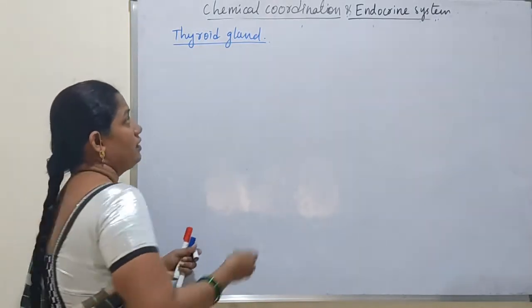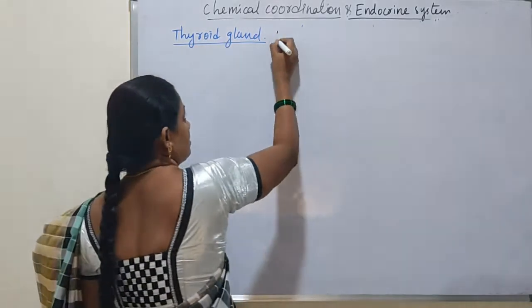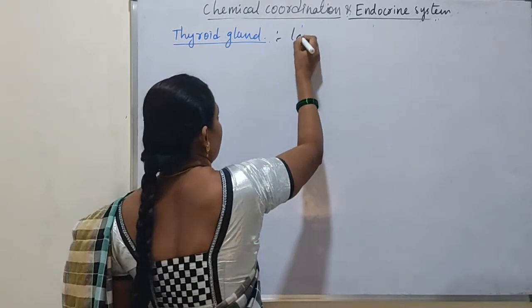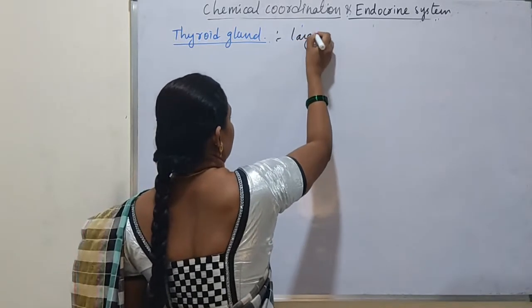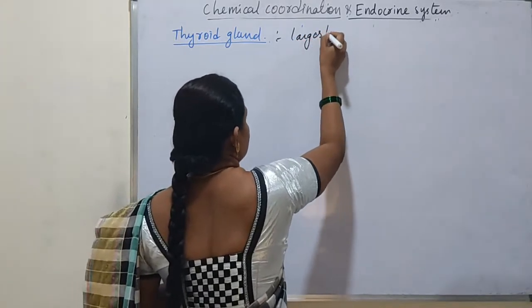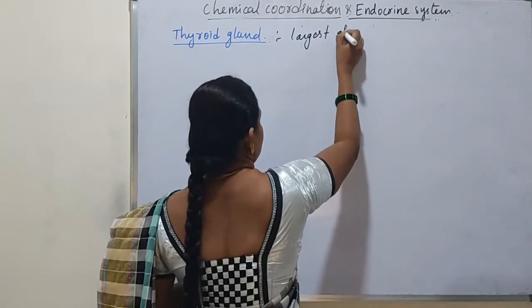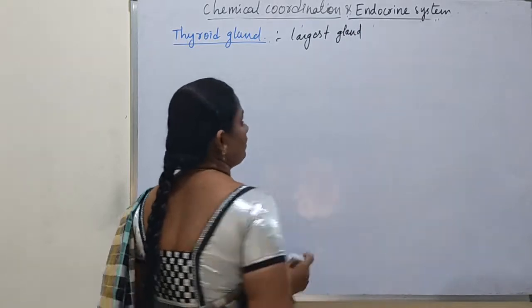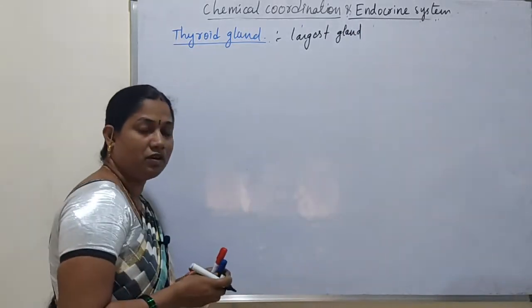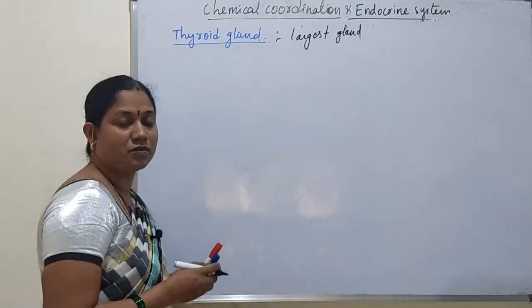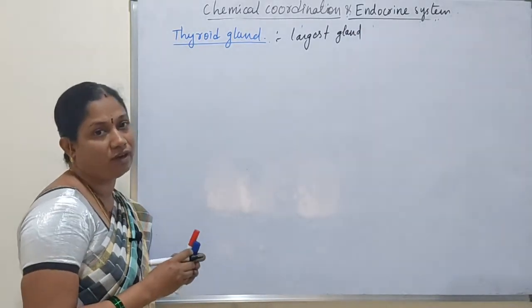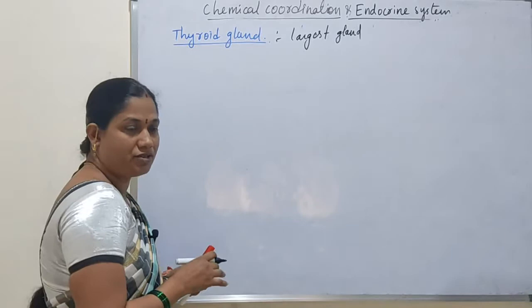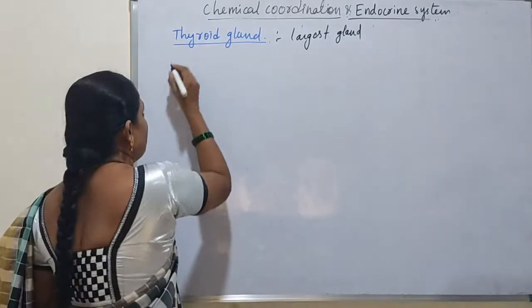The thyroid gland is the largest gland in the endocrine system. Compared to all endocrine glands, it is the largest gland.